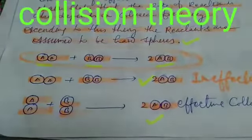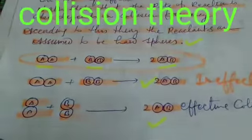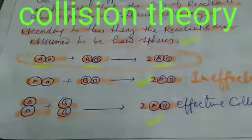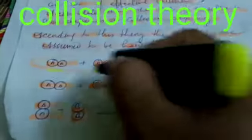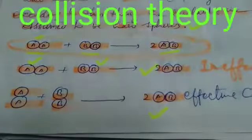In both cases, we want to have 2AB, two molecules of AB. But in the first case, you can see that here there is possibility to form only one molecule of AB, because this atom and this atom may not collide with each other.